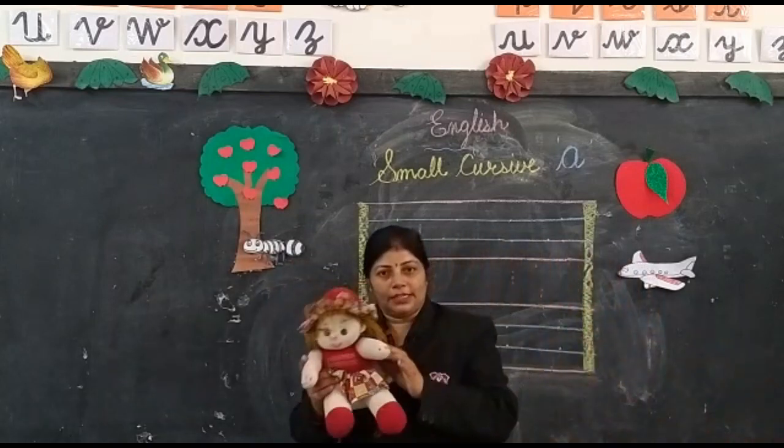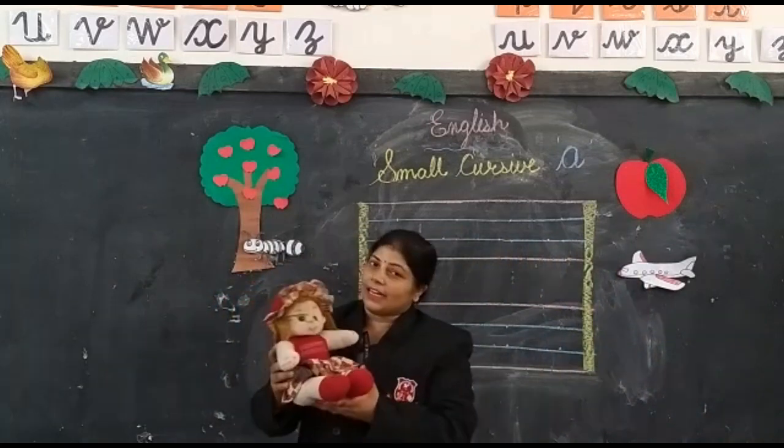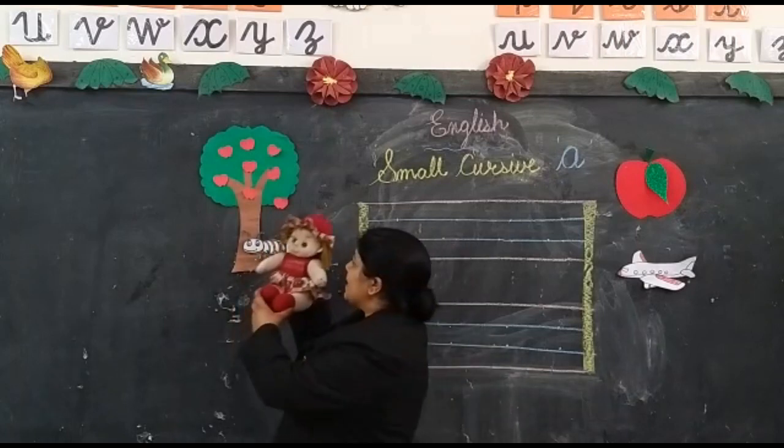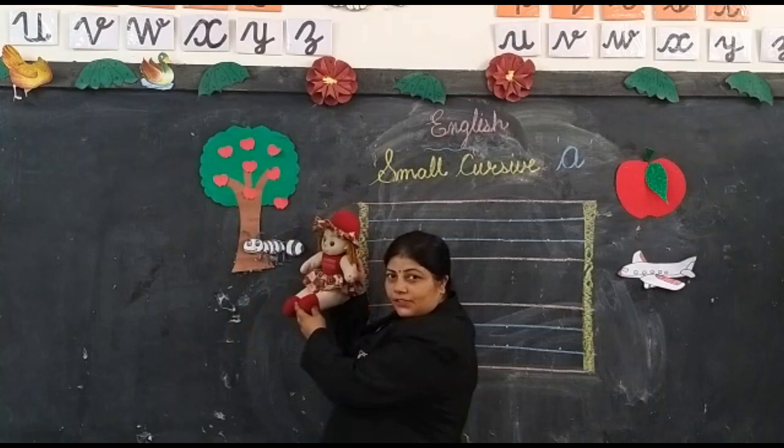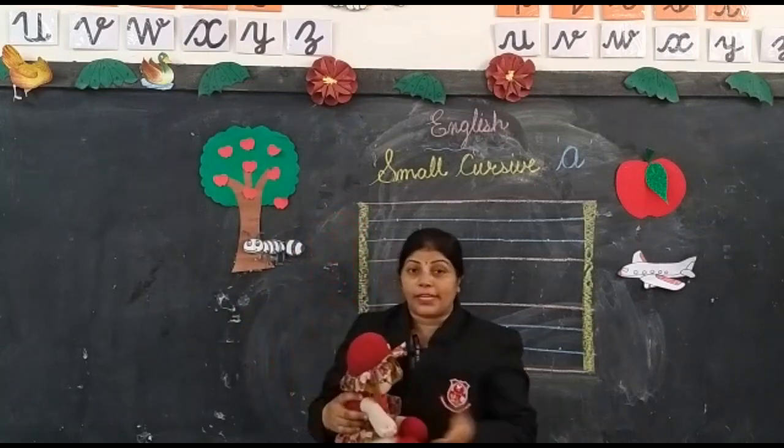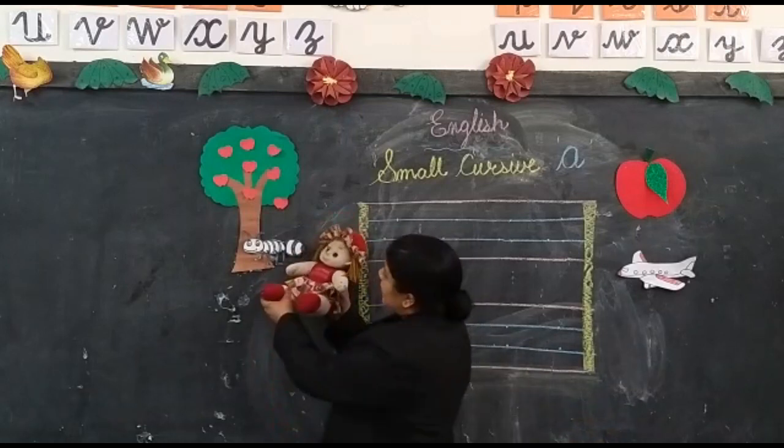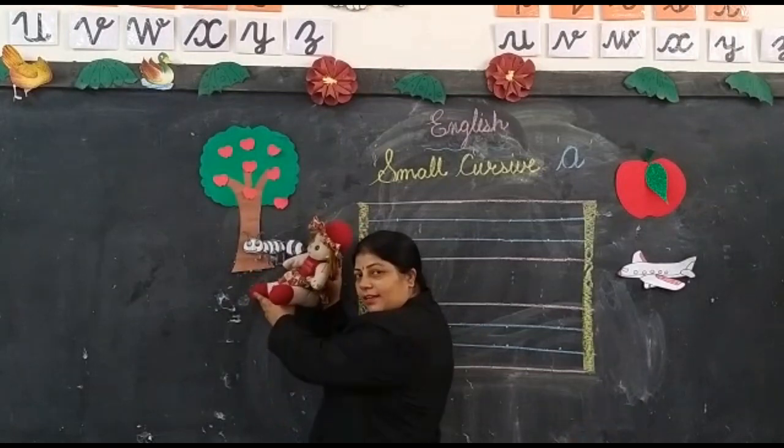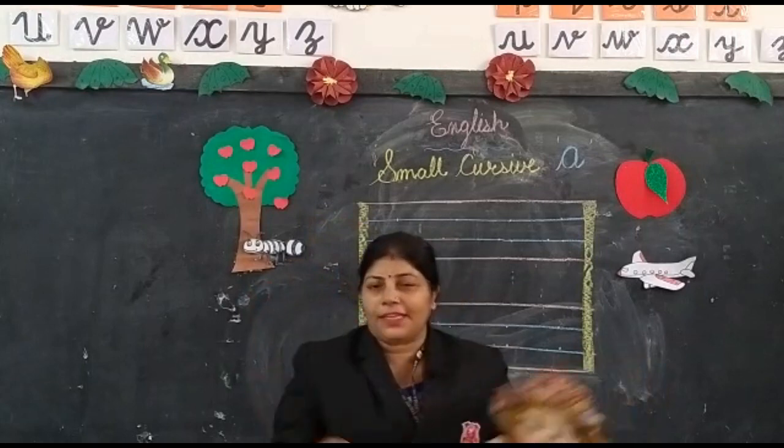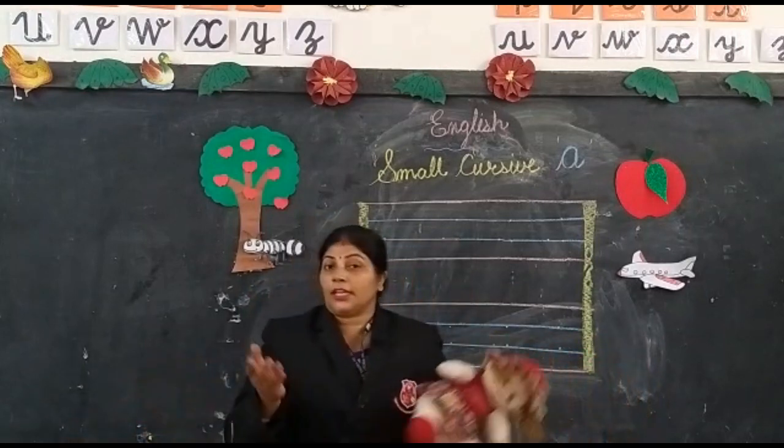Once upon a time there was a little girl. Her name was Annie. She climbs up on an apple tree. So do you know children what happened to her? One ant came and bite on her ankle and she says, something is tickling me, something is tickling me. So she shouted.